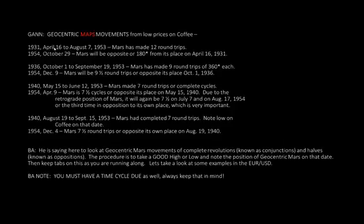1931 April 16 to August 7, 1953: Mars has made 12 round trips. 1954 October 29: Mars will be opposite — 180 degrees — from its place on April 16, 1931. 1936 October 1 to September 19, 1953: Mars has made nine round trips of 360 degrees each. 1954 December 9: Mars will be nine and a half round trips, or opposite its place on October 1, 1936.